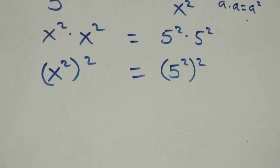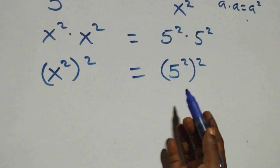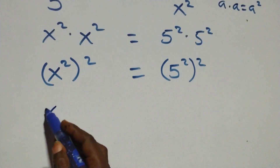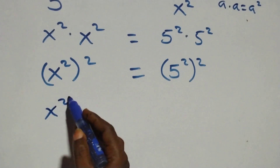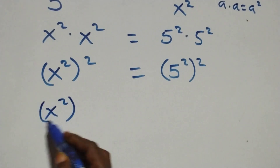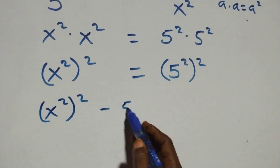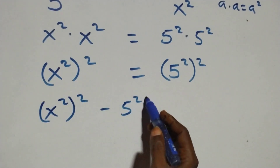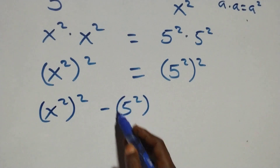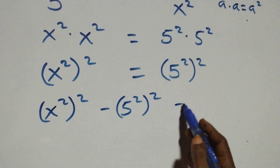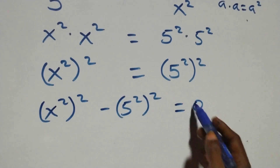At this point, we take the right hand side to the left hand side and we have x squared over 4 squared minus 5 squared over 4 squared, and then equals to 0 here.